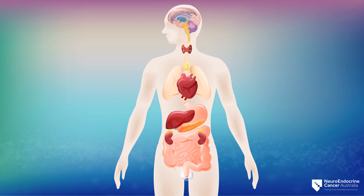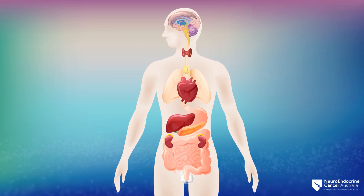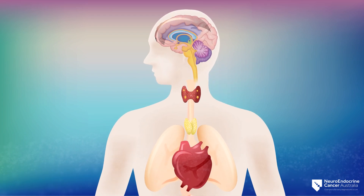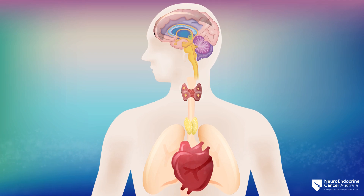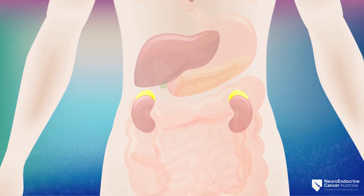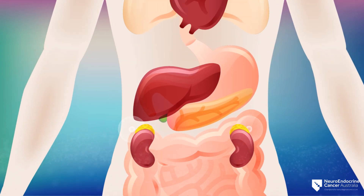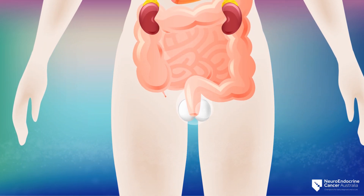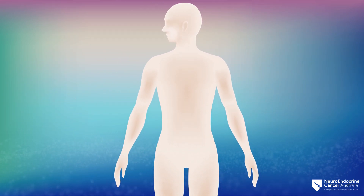Since neuroendocrine cells are spread throughout the body, NETs can develop in many different places, including in endocrine glands. The following are also NETs: medullary carcinoma, a type of thyroid cancer; parathyroid cancer; thymic neuroendocrine cancer; pheochromocytoma, which starts in the adrenal glands; paraganglioma; pituitary gland tumours; neuroendocrine tumours of the ovaries or testicles; and Merkel cell carcinoma, a type of non-melanoma skin cancer.